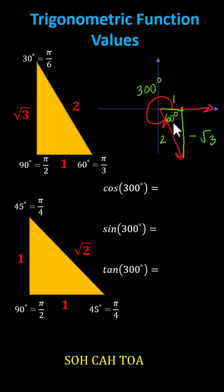And now we use the reference angle and reference triangle to determine the trig function values. Cosine 300 degrees equals the ratio of the adjacent side to the hypotenuse, which would be one divided by two or one-half. Sine 300 degrees equals the ratio of the opposite side to the hypotenuse, which is negative square root of three divided by two.